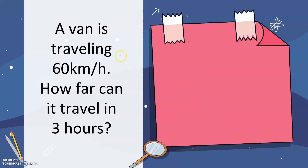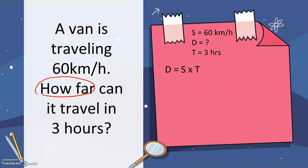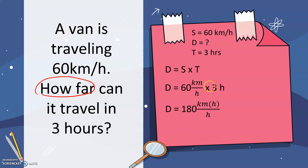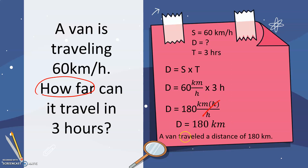Another one: a van is traveling 60 kilometers per hour. How far can it travel in 3 hours? The question asks 'how far,' so we are looking for distance. Using the given speed of 60 kilometers per hour and time of 3 hours, we multiply speed and time. That gives us 60 times 3 equals 180, and canceling out the hours unit, we have 180 kilometers. A van can travel a distance of 180 kilometers.